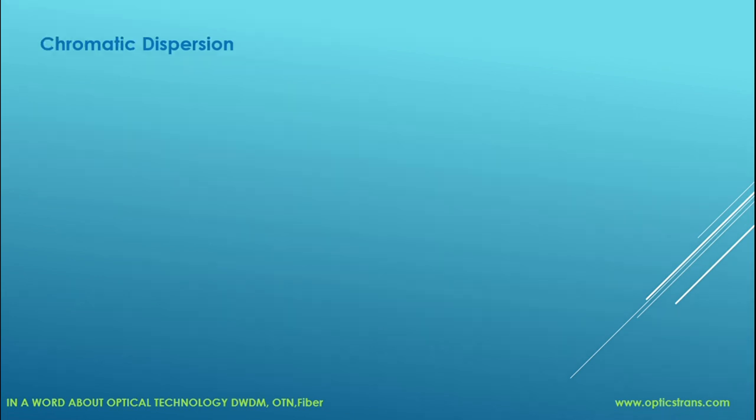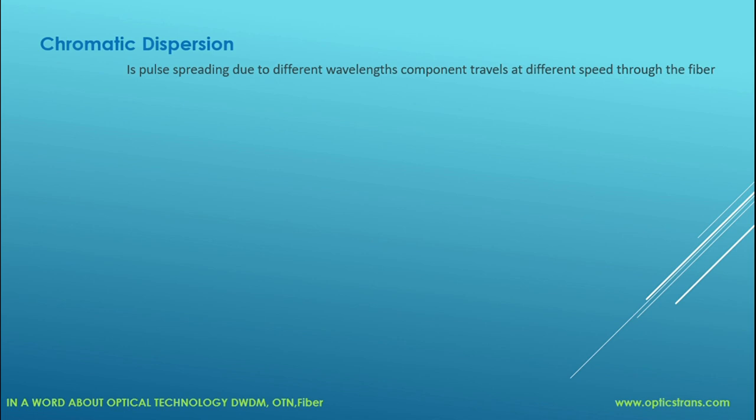Chromatic dispersion is pulse spreading due to the fact that different wavelengths of light propagate at slightly different velocities through the fiber, because the index of refraction of the glass fiber is wavelength dependent and different wavelengths propagate at different velocities.